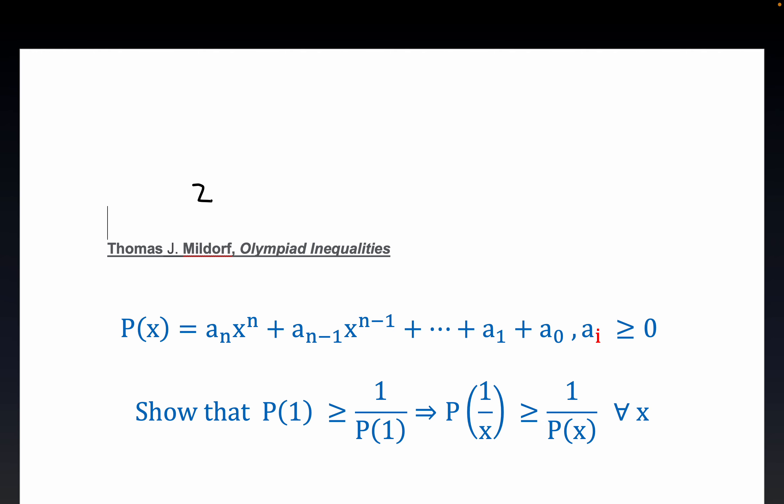We have a problem from a document produced by Thomas J. Mildorf back in I believe it was 2005. It's been a while back and the title of the document is Olympiad Inequalities.